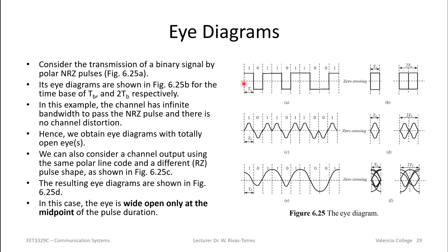Starting with an ideal non-return-to-zero rectangular pulse: if you overlay one bit interval repeatedly, the trace goes up and returns, giving a rectangular shape. For two bit times you have two rectangles. But in practice we transmit more rounded pulses, as shown in figure C. Doing the same overlaying exercise with rounded pulses gives something that begins to look like a human eye. With two intervals, you have two human eyes — that's your eye diagram.